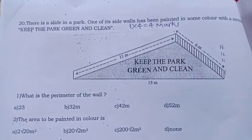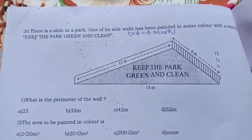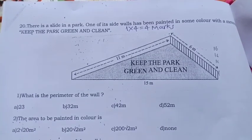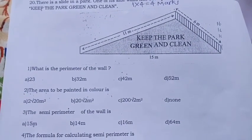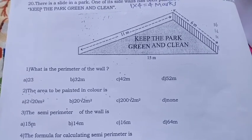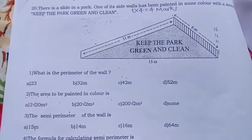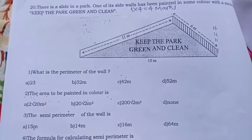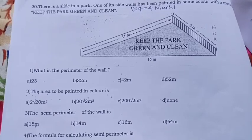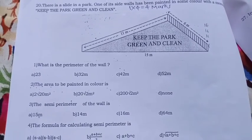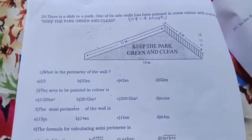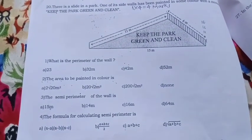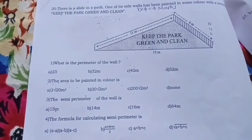There is a slide in the park. One of its side wall has been painted in some color with a message, keep the park green and clean. Here also each carries one mark. What is the perimeter of the wall? 23, 32, 42, 52. Look at the picture. The area to be painted in color is? The semi-perimeter of the wall is? The formula for calculating semi-perimeter is? Look at the options carefully and find out the answer. Each carries only one mark.